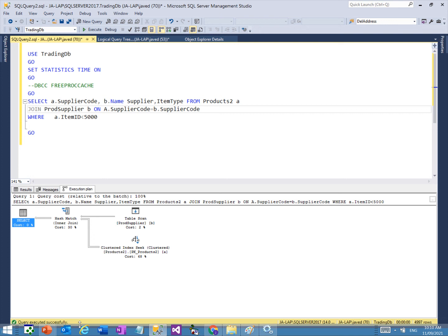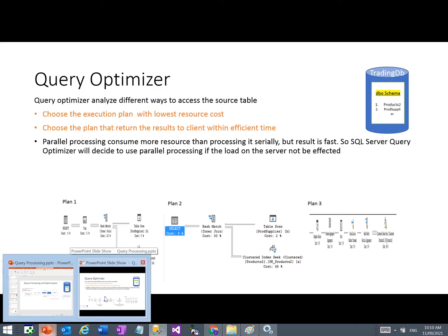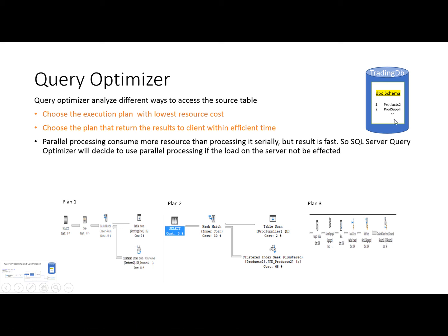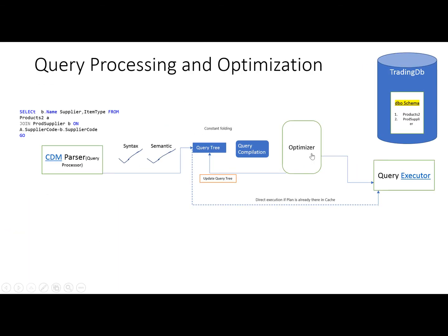This is the responsibility of the query optimizer — to analyze different ways to retrieve records from the tables using the logical steps created by the query parser, and then execute that chosen plan. Now if the same query is submitted again, the query compilation and optimization steps will be skipped because the executed plan is stored in the cache. It will directly go to the cache, take the plan, and execute it. When the query optimizer finalizes the plan and the steps, these steps are updated into the query tree. In this way the SELECT query is processed and optimized.